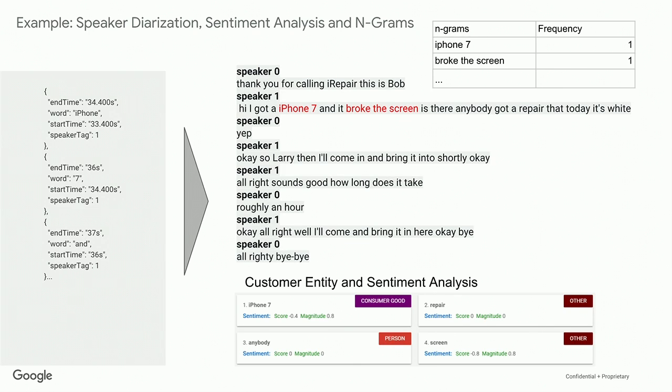Some of the other things we could do around that is entity and sentiment analysis. In this case, you can see the consumer good being an iPhone 7, and the sentiment score is a negative 0.4 — which is negative because they broke the screen. They're probably unhappy about that and just trying to get it repaired. You can see all of that in the entity and sentiment analysis.